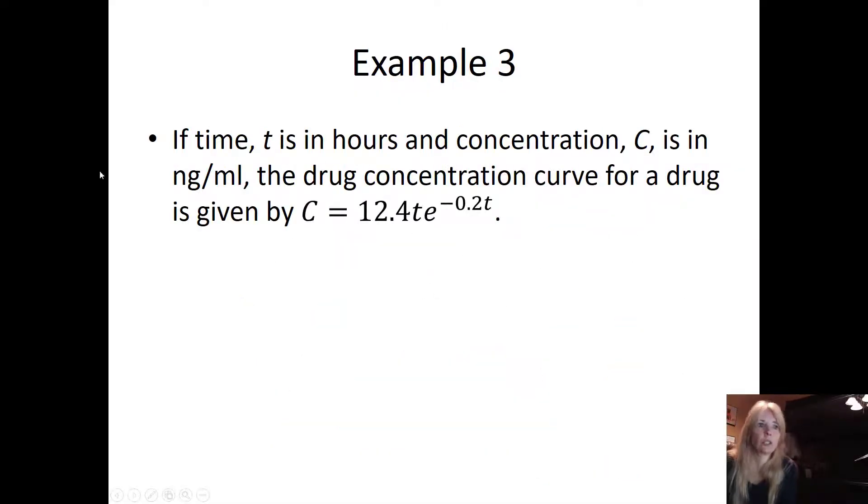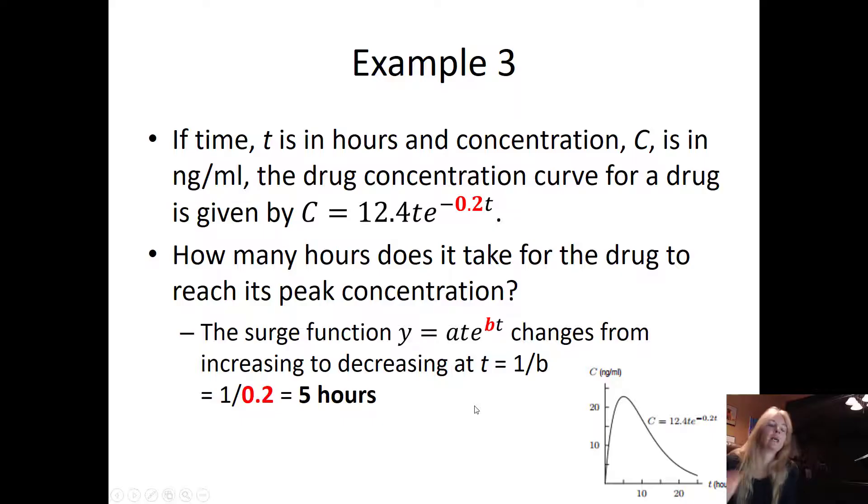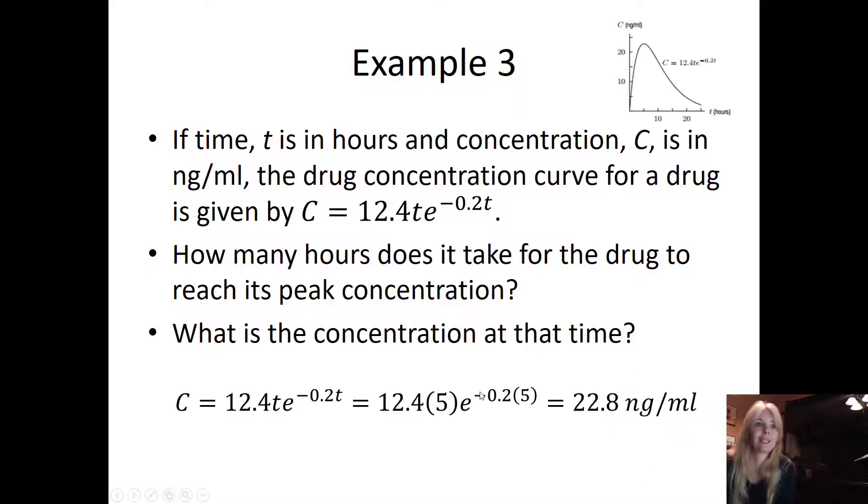How many hours does it take for the drug to reach its peak concentration? Well, if you know you have a surge function, you simply take 1 over b. So b is whatever this value is here, meaning you don't take the negative with it, which would make sense—not negative hours. So 1 over 0.2, and I can kind of see that that's where it is on my graph. What is the concentration at that time? I simply plug in 5 hours for my time, and that gives me my concentration value.